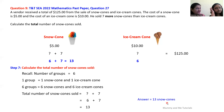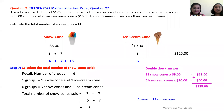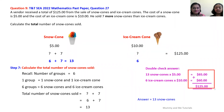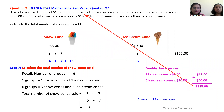Here's how parents and children at home can confirm whether the answer is correct. The cost of one snow cone is $5, so 13 snow cones cost 13 multiplied by $5, which equals $65. Six ice cream cones cost 6 multiplied by $10, which equals $60. Adding these together: $65 plus $60 equals $125, which is the amount the vendor earned from the sale of both snow cones and ice cream cones. This confirms our answer is correct.